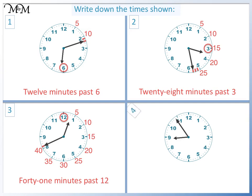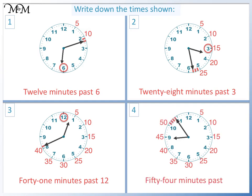Question four. The minute hand is pointing to fifty, plus four, which makes fifty-four minutes past. The hour hand has moved past eight, so the time is fifty-four minutes past eight.